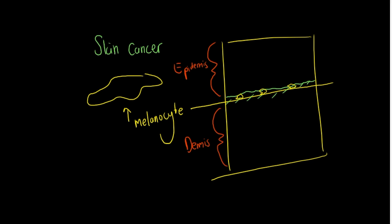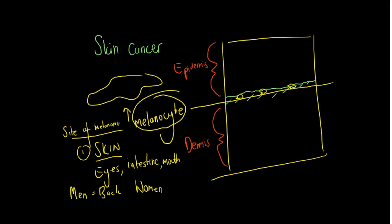Most commonly the sites of melanoma is the skin. You can also get them in places like the eyes, the intestine, the mouth - anywhere where a melanocyte is and becomes mutated. In men the most common site is the back, and in women the most common site to find a melanoma are the legs. So let's move on now and have a look at the causes and risk factors for melanoma.